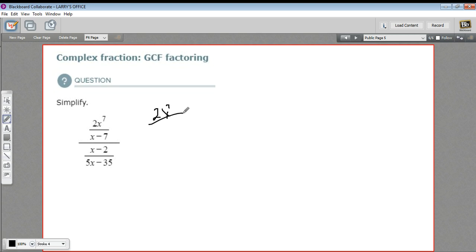as 2x to the seventh over x minus 7, divided by x minus 2 over 5x minus 35. And then of course we can rewrite that as a multiplication problem by just flipping the second fraction.